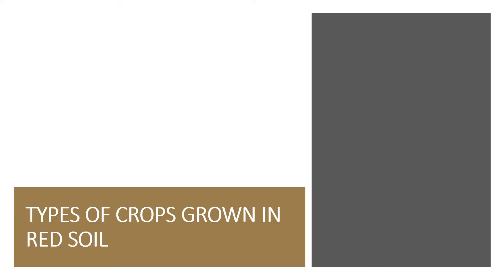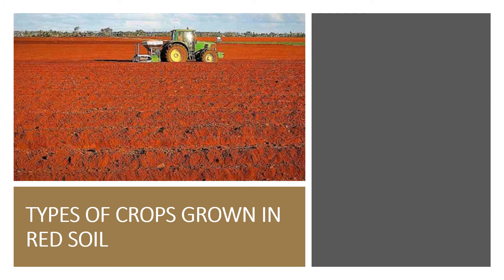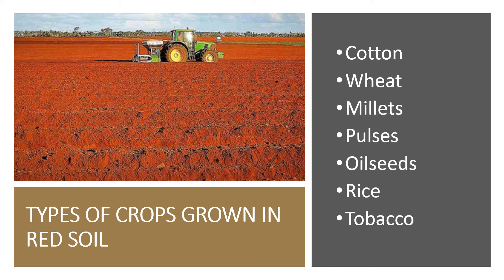Red soil is red in color and is not as fertile as black soil, but can be made fertile by adding manure. It is good for crops such as cotton, wheat, millets, pulses, oil seeds, rice and tobacco.